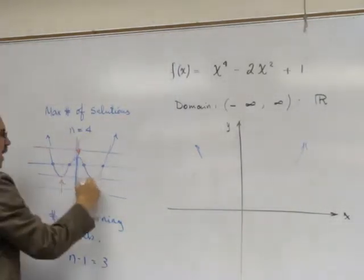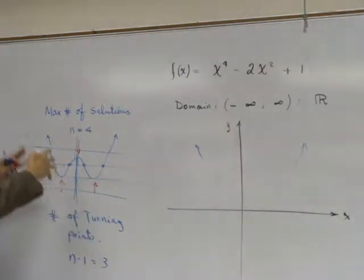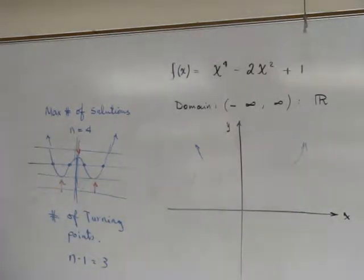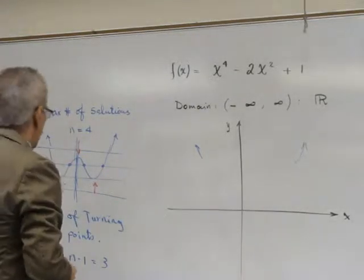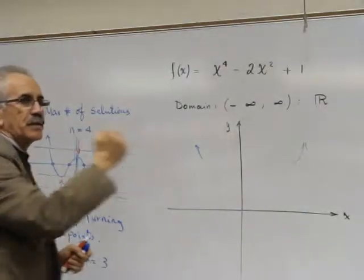Yes, 3 turning points. They are located by this way, so this is the general shape. In order to graph exactly we need to calculate some points.